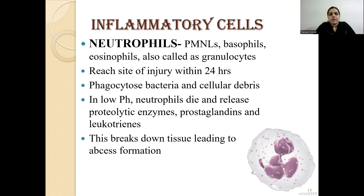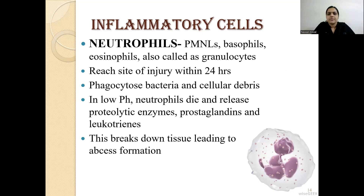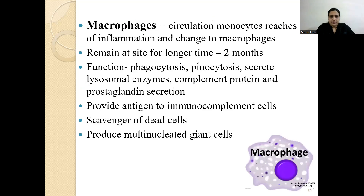Inflammatory cells include predominantly neutrophils, PMNLs, basophils, and eosinophils — all classified as granulocytes. Neutrophils reach the injury site within 24 hours, where they phagocytose bacteria and cellular debris. In the absence of proper pH conditions, neutrophils die and release proteolytic enzymes, prostaglandins, and leukotrienes. This breaks down tissue, leading to abscess formation.